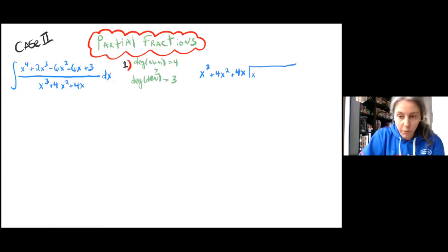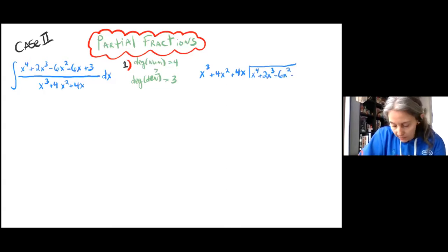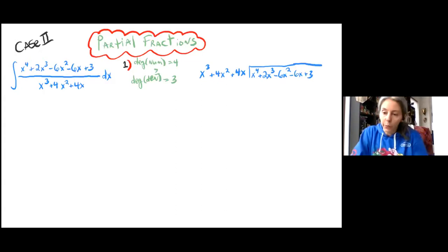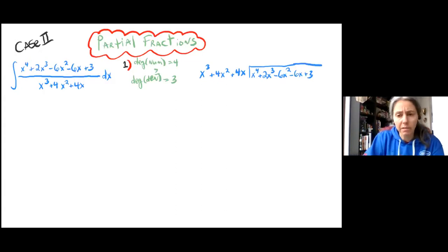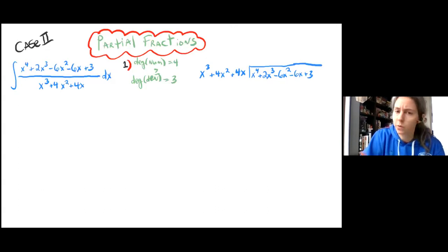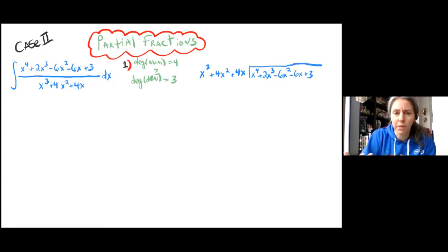So x cubed plus 4x squared plus 4x goes into x to the 4th plus 2x cubed minus 6x squared minus 6x plus 3. I'm gonna go through it a little bit fast. If you are having trouble or don't remember how it works, I did a polynomial division video you can easily go look at, where I talk in more depth about how I follow the steps. So go check that out if you find this a little rough.